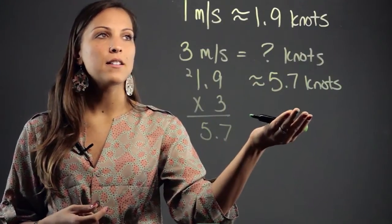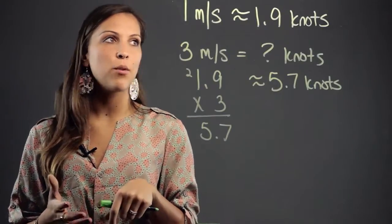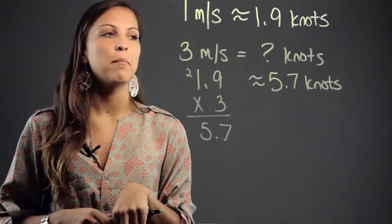And if you had the knots and you wanted to go backwards and find out how many meters per second that is equivalent to, now instead of multiplying, we're just going to be dividing by 1.9.